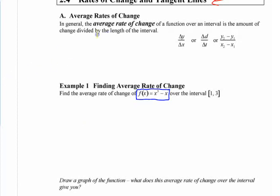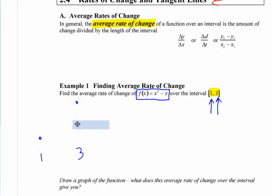To find the average rate of change, all you need is the starting values and the ending values. If you want to know the change in this function over that interval, if you know the starting and ending x value — like you're starting at 1 and ending at 3 — all you need to know is what's the y value for this? Where is this point? So if you look at a graph of that, can you create a graph here?